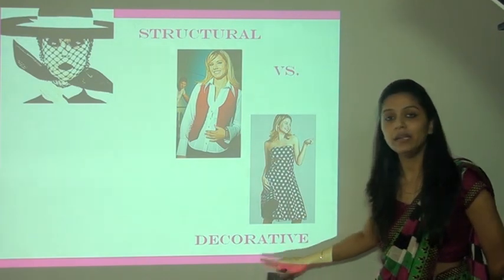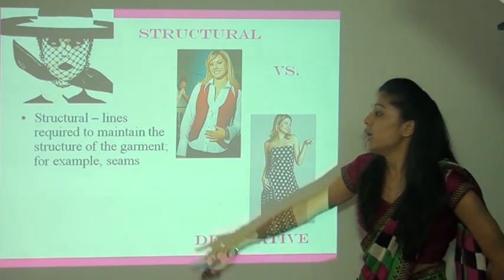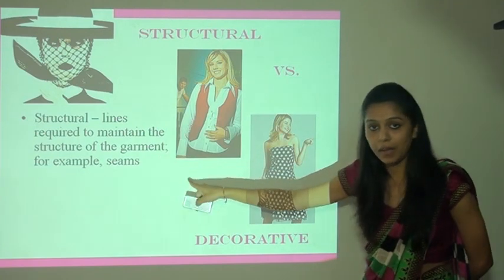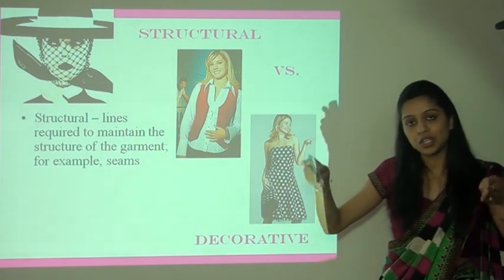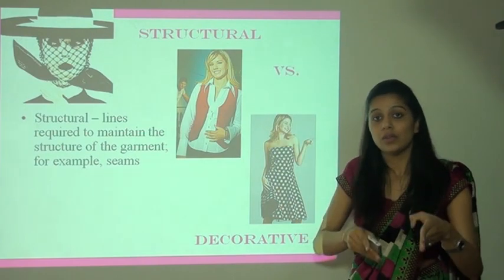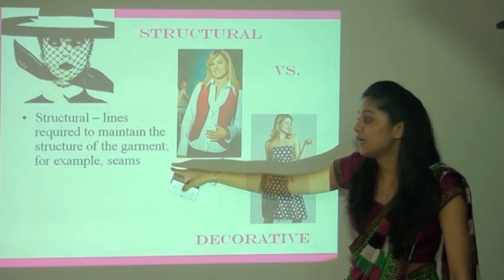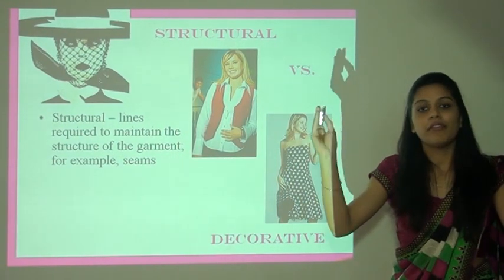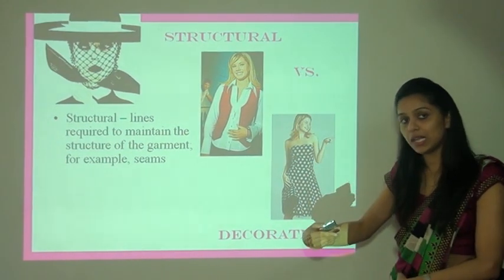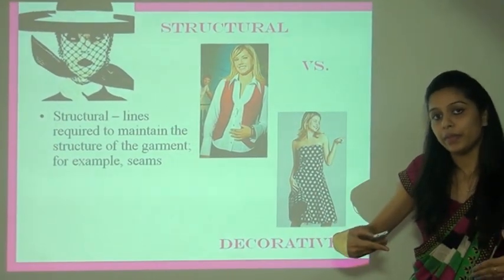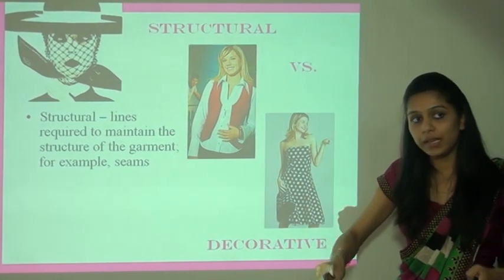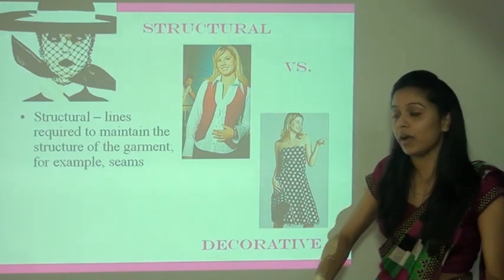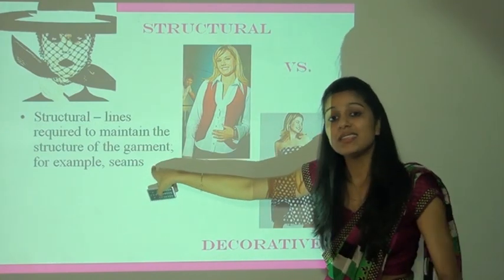Structure lines are required to maintain the structure of the garment — for example, a seam. Seem aapka jo bhi ham garment stitch karte hain, side mein jo seam dete hain ya stitch dete hain — that is a seam. If you take a piece of fabric, stitch one side, stitch the other side, and open it — ek structure create ho gaya. If you stitch with curve lines — ek curve structure create ho gaya. These are structure lines.